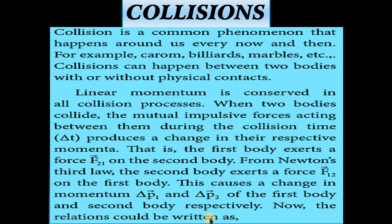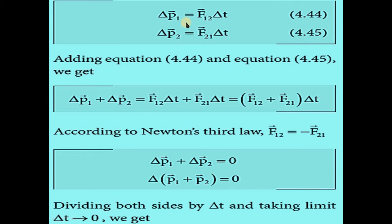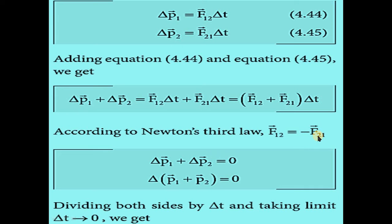The relation can be written as: Δp₁ vector equals F₁₂ vector into Δt, and Δp₂ vector equals F₂₁ vector into Δt. Adding these two equations, we get Δp₁ + Δp₂ equals (F₁₂ + F₂₁) into Δt, removing Δt as the common factor.